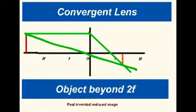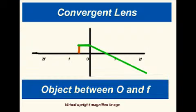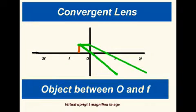If the object is between the pole and a principal focus, the situation is quite different. The image is virtual, upright and magnified.